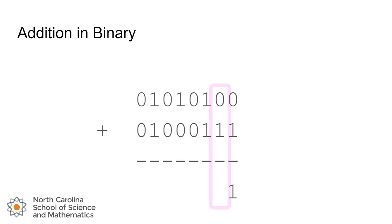And we'll move to the next position, to our 2's position. 0 and 1 also sum to 1. And we'll move on to the next position, the 4's position. 1 plus 1 is going to give us a total of 2, which we represent as 10. So we're going to write the 0 down below, and the 1 we're going to carry over to the next position.